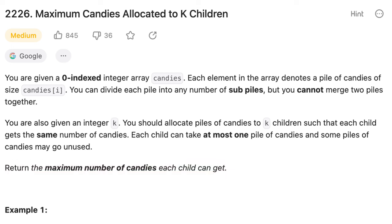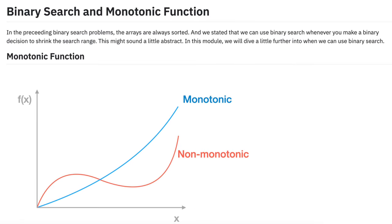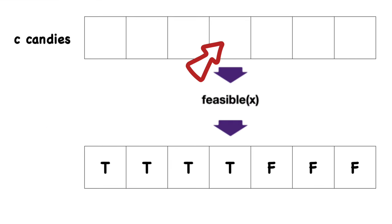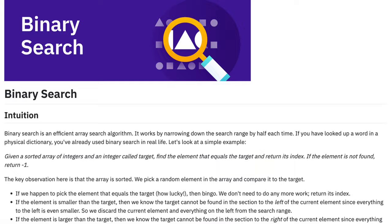You should allocate piles of candies to k children such that each child gets the same number of candies. Each child can take at most one pile of candies, and some piles may go unused. Return the maximum number of candies each child can get. Notice that the problem statement is asking for the maximum number of candies each child will receive. We can classify this as a maximum or minimum problem in our flowchart. Additionally, we can observe a monotonic property in the problem. If it's feasible for each child to receive C candies for a certain value C, then it is always possible for each child to receive C-1 candies. From this observation and our flowchart, we can deduce that binary search is a viable strategy to solve this problem.